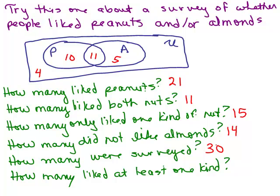How many liked at least one kind of nut? That means they're not in the outside group that didn't like anything. These three numbers inside liked at least one kind — either both kinds or just one or the other. So: 10 and 11 is 21, plus 5 more is 26.